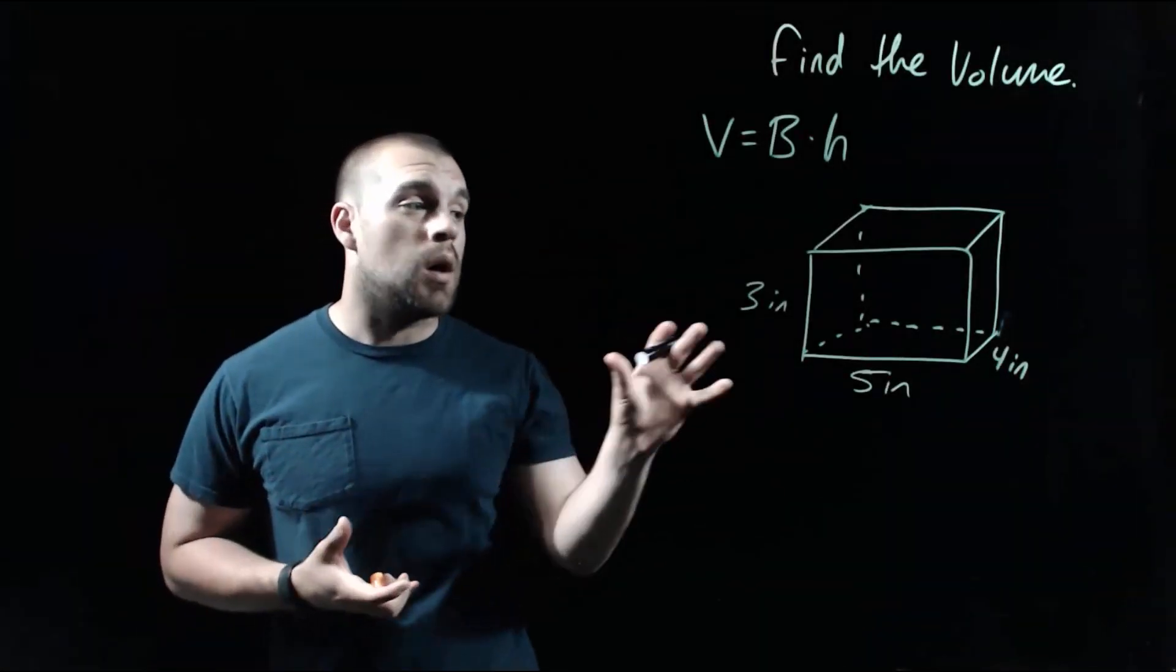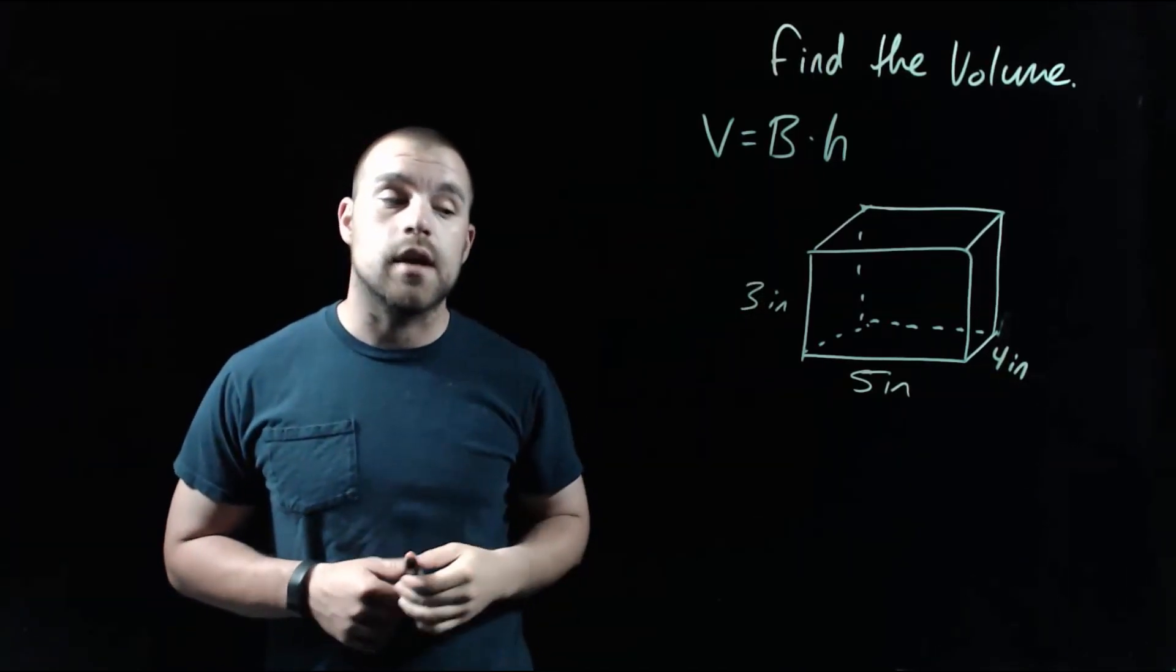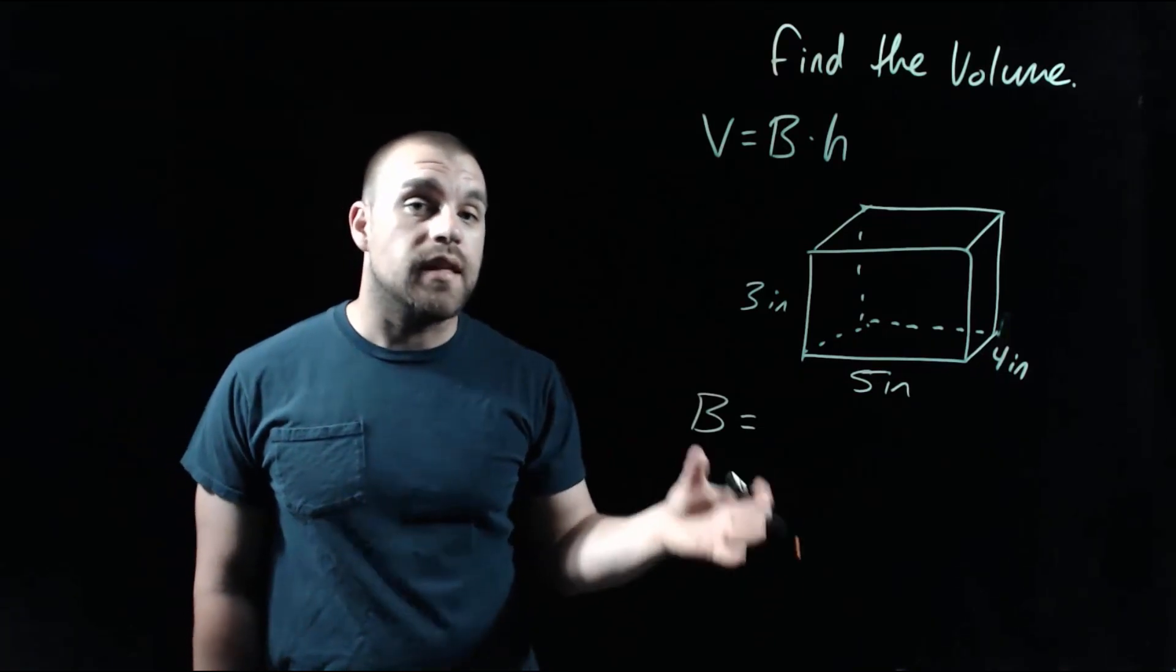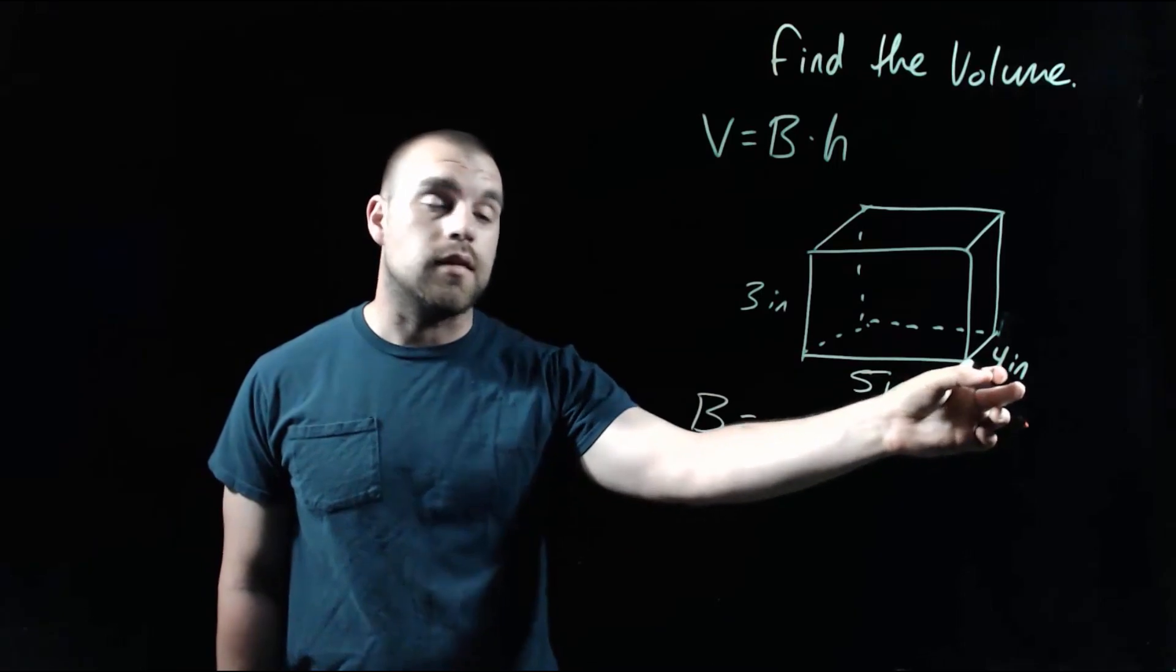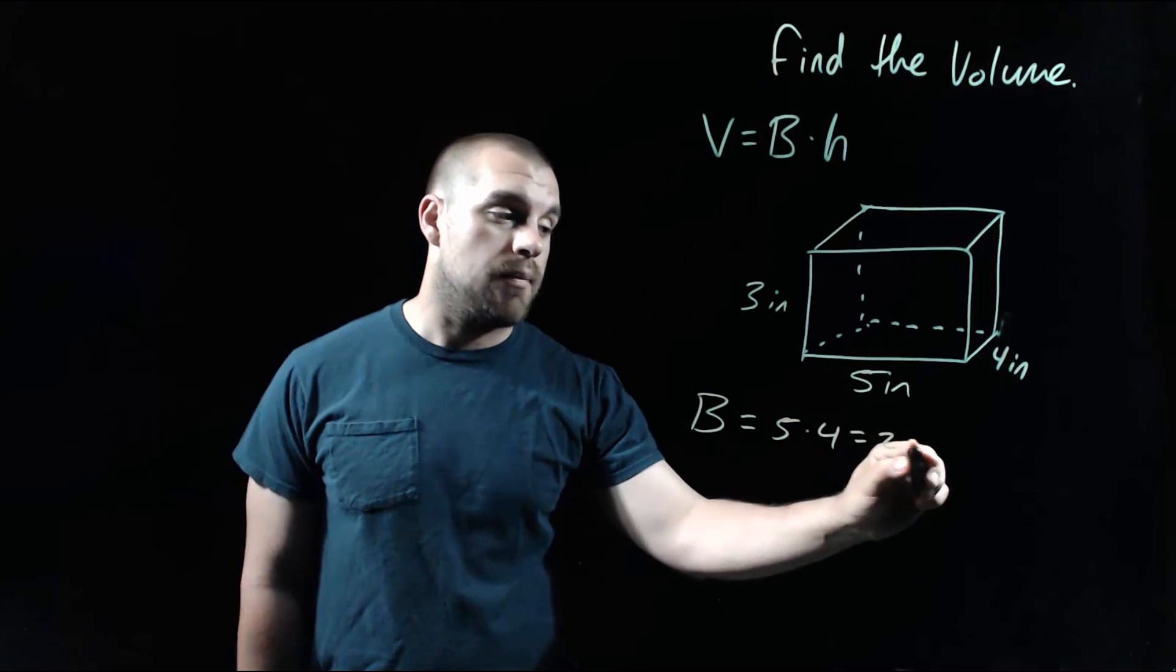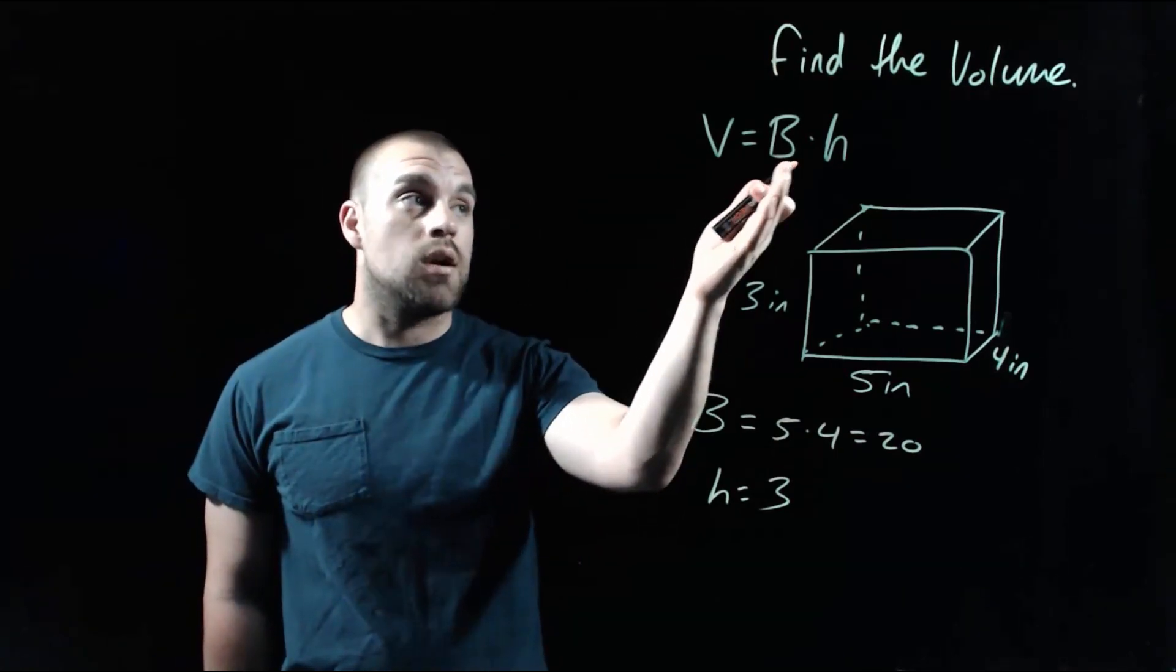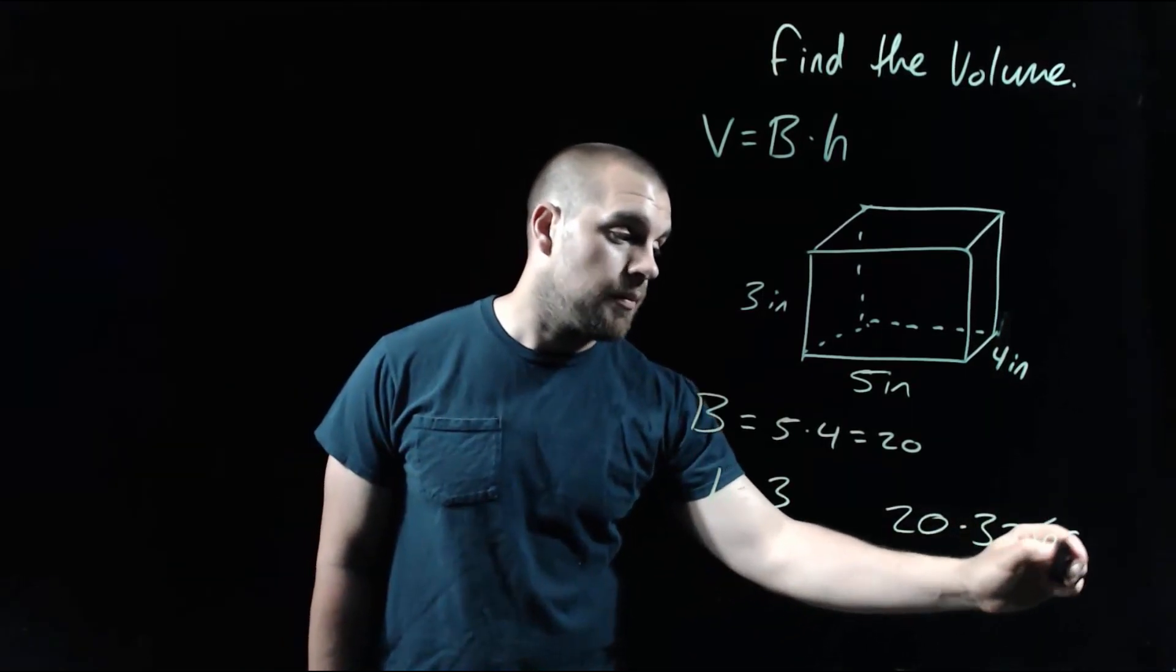As we're looking at finding the volume of this rectangular prism, remember our volume formula is area of the base times the height. The first thing I'm going to do is find the area of the base of our prism. We're looking at a rectangle on bottom, so in order to find the area of that rectangle, we're looking at the five inch measurement and the four inch measurement. If we take five times four, we end up with 20 as the area of our base. Then looking at the height, we've got the three inch length. We're going to take that area of the base times that height, so 20 times three, and end up getting 60.